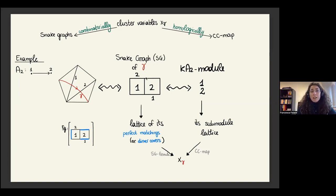Then you can look at the perfect matching of this snake graph, which means taking a collection of edges so that each vertex is covered exactly once. For this snake graph there are three perfect matchings. You write down the lattice of these perfect matchings, apply the snake graph formula, and then recover your cluster variable.